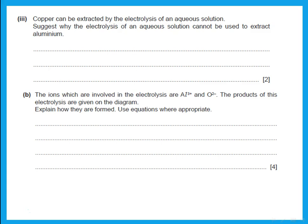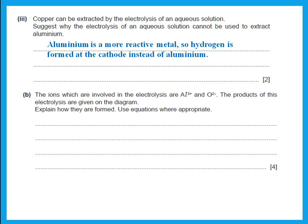Copper can be extracted by the electrolysis of an aqueous solution. Why can the electrolysis of an aqueous solution not be used to extract aluminium? To extract aluminium we must do electrolysis of molten aluminium oxide, not a solution, because aluminium is a more reactive metal. Hydrogen is formed at the cathode instead of aluminium when we use a solution — the more reactive metal does not deposit at the cathode; hydrogen reacts and forms there instead.